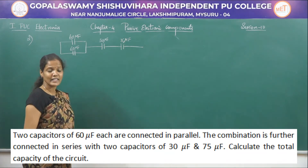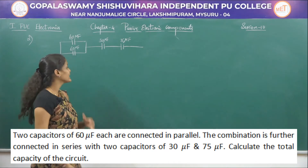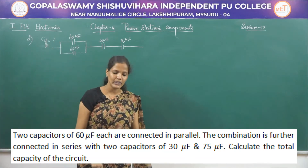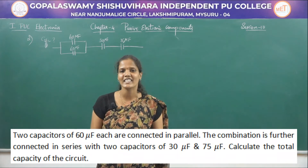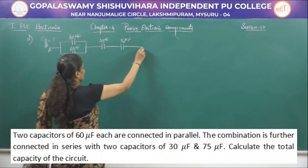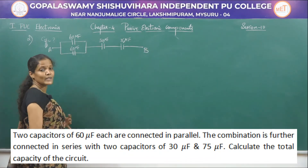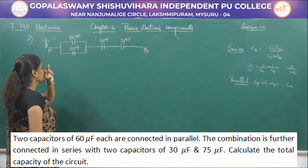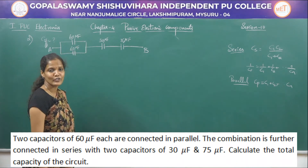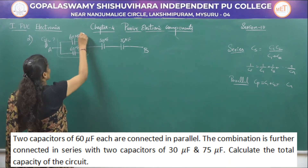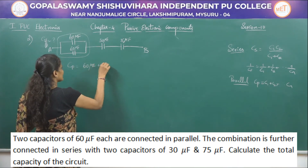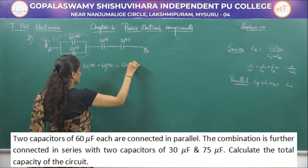We need to find C effective between terminals A and B. First, the two 60 microfarad capacitors in parallel: Cp = 60 + 60 = 120 microfarad. Now in place of those two capacitors we have a single 120 microfarad capacitor, and this is in series with the 30 microfarad and 75 microfarad capacitors.